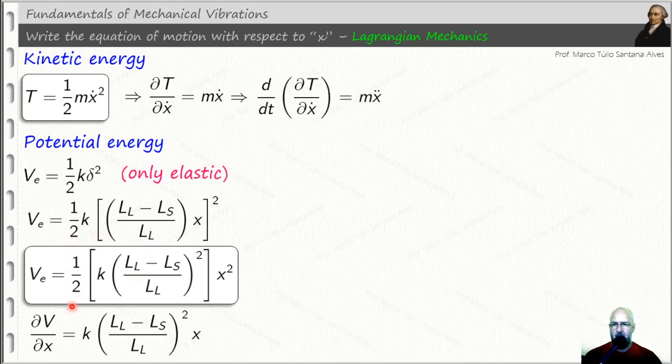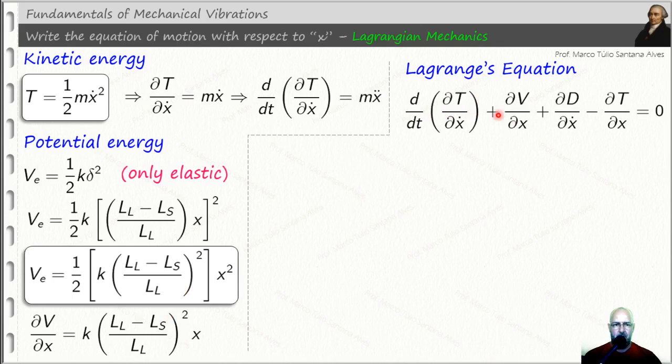Now we need to do the same for the potential energy. We need to calculate the partial derivative of the potential energy with respect to x, so we get this configuration here. Just to remember, here is the Lagrange's equation. But let's check some characters here. We have no damping, for this reason we can eliminate this term here.